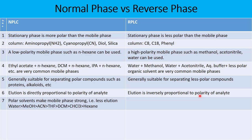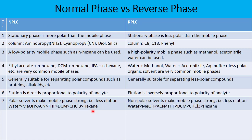Polar solvents make the mobile phase stronger as far as normal phase liquid chromatography is concerned, and when there is a stronger mobile phase you can expect less retention time. In normal phase liquid chromatography, water is the strongest solvent, followed by methanol, acetonitrile, tetrahydrofuran, dichloromethane, chloroform, and hexane. Hexane is therefore the poorest solvent in normal phase.